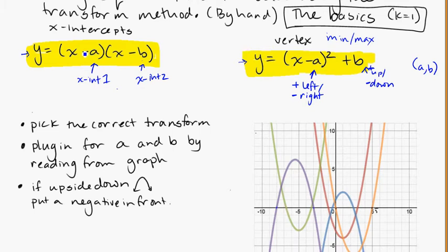And here watching for our signs as well if the x-intercept is a negative number you'll have a positive in brackets. And if the x-intercept is a positive you'll have a negative in the brackets.